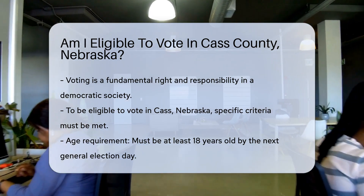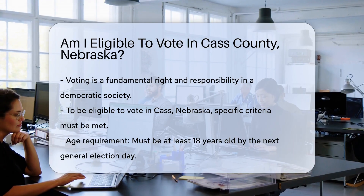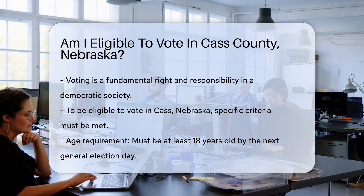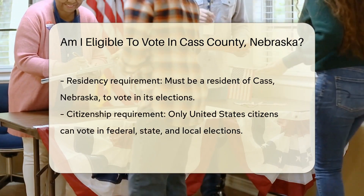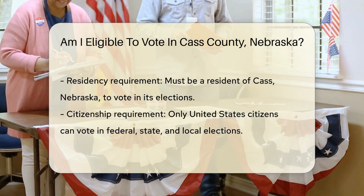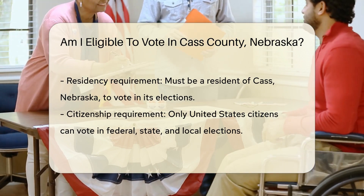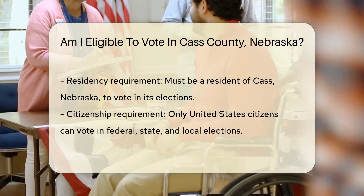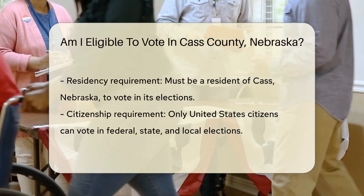Firstly, age is a primary factor. You must be at least 18 years old on or before the next general election day to vote. This requirement ensures that voters have reached the age of majority, granting them the legal capacity to participate in deciding their representatives and policies. Residency is another crucial criterion. You must be a resident of Cass, Nebraska, to vote in its elections. This requirement ties your voting rights to your community, ensuring that those who have a stake in local decisions are the ones making them.